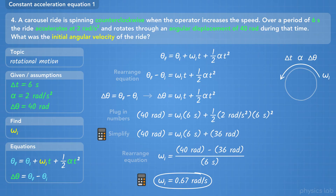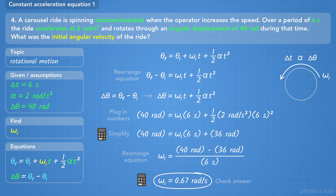Work through a problem in the order that's easiest for you. Over time, you might prefer one method over the other. Certain problems might be easier to solve by plugging in numbers early, or by leaving everything as variables until the end. The problem says we start with a counterclockwise velocity, so our answer should be positive — which it is.